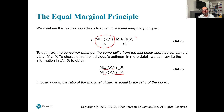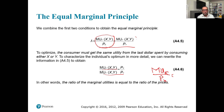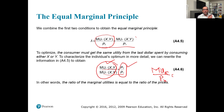We combine the first two conditions to obtain the equal marginal principle — whatever we have, the marginal utility per dollar of each good should be equal. To optimize, the consumer must get the same utility from the last dollar spent on either x or y. In other words, the ratio of marginal utilities equals the ratio of prices. This is the slope of the indifference curve equaling the price ratio or slope of the budget constraint — and at the point of utility maximization, these two curves are tangent to each other.